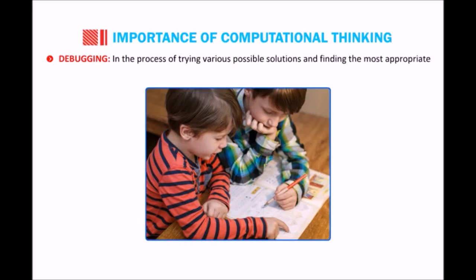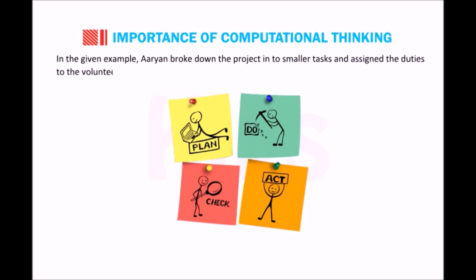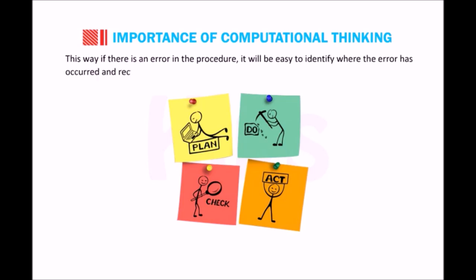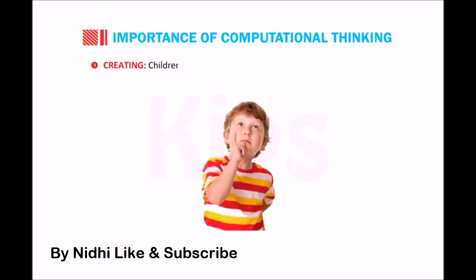Debugging: in the process of trying various possible solutions and finding the most appropriate one, children learn to find and fix errors. In the given example, Aryan broke down the project into smaller tasks and assigned duties to the volunteers. This way, if there is an error in the procedure, it will be easy to identify where the error has occurred and rectify it.